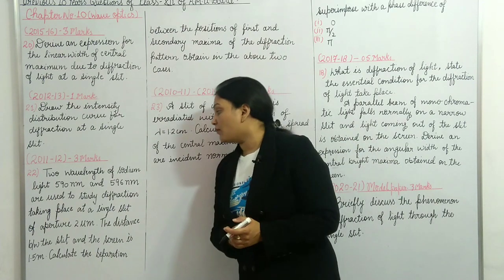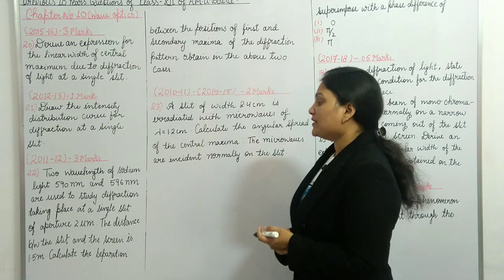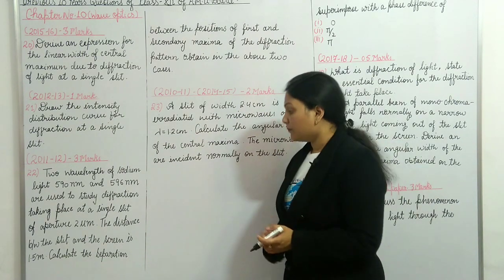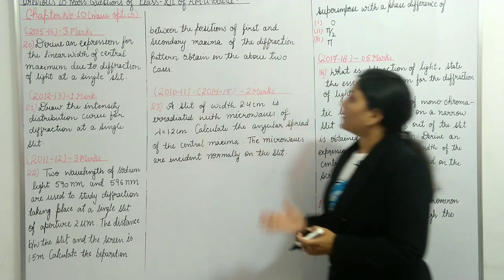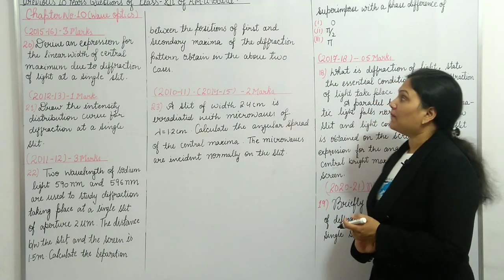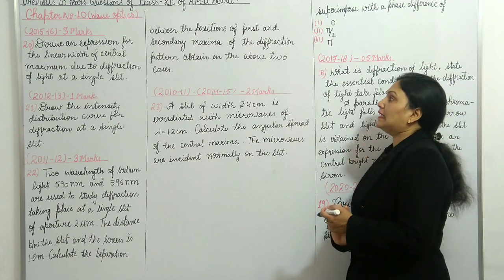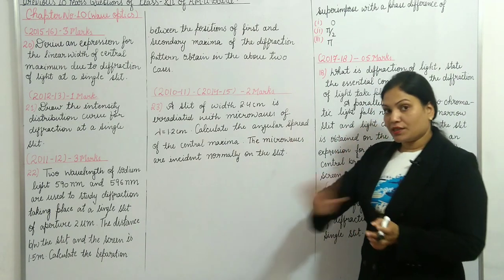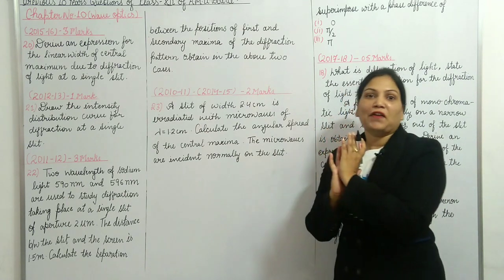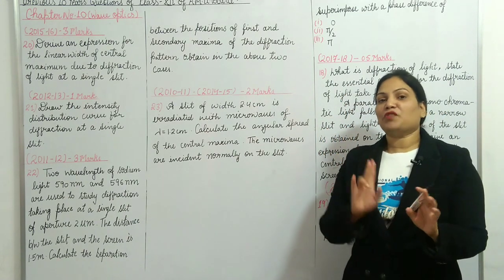A slit of aperture a few micrometers — the distance between the slit and the screen is 1.5 meters. Calculate the separation between the positions of the first and secondary maxima of the diffraction pattern obtained in the above two cases.